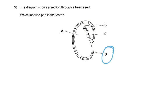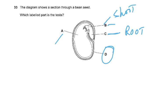Question 33: the diagram shows a section through a bean seed. Which labeled part is the testa? The testa is the outer seed coat. B is the plumule, C is the radicle, A is the cotyledons where food is stored. The radicle becomes the root and the plumule becomes the shoot.